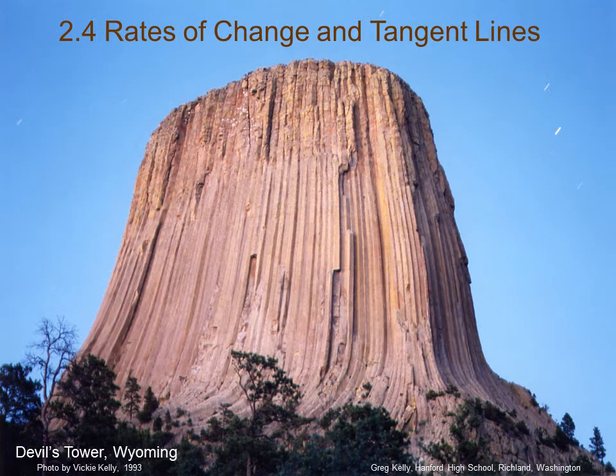Lecture 2.4, Rates of Change and Tangent Lines. This is Devil's Tower in Wyoming. To give you a sense of scale, these trees are full-size pine trees, and if you were to see a climber up here, they'd be about the size of this dot. This was featured in a movie called Close Encounters of the Third Kind, but no, there is no alien landing site at the top.